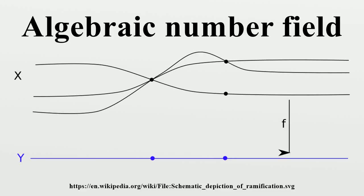In mathematics, an algebraic number field F is a finite degree field extension of the field of rational numbers Q. Thus F is a field that contains Q and has finite dimension when considered as a vector space over Q.